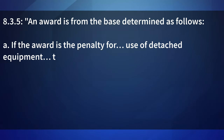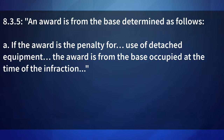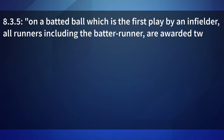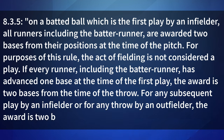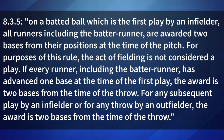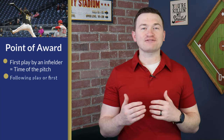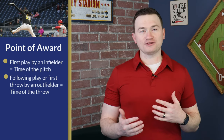Now we've covered the number of bases awarded, but how do we determine the bases we will award from? Rule 8-3-5: an award is from the base determined as follows. If the award is the penalty for use of detached equipment, the award is from the base occupied at the time of the infraction. On a batted ball which is the first play by an infielder, all runners, including the batter runner, are awarded two bases from their positions at the time of the pitch. For purposes of this rule, the act of fielding is not considered a play. If every runner, including the batter runner, has advanced one base safely at the time of the first play, the award is two bases from the time of the throw. For any subsequent play by an infielder or for any throw by an outfielder, the award is two bases from the time of the throw.